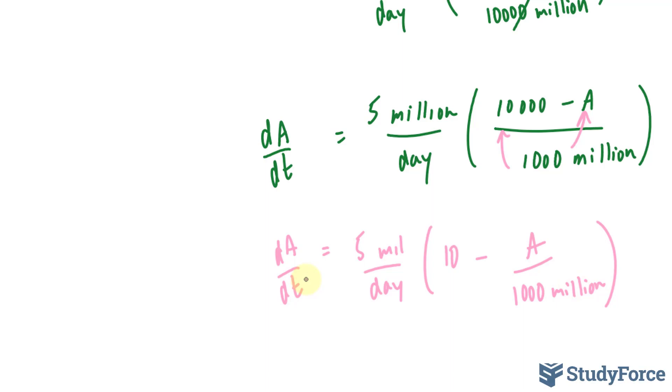At this stage, you would have to separate the A and the T terms. Subsequently, integrate both sides to get the general solution.